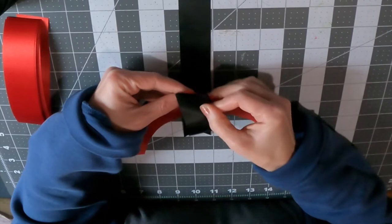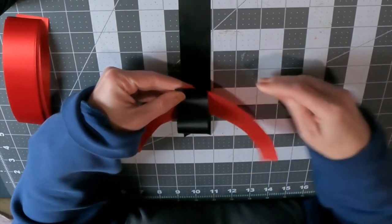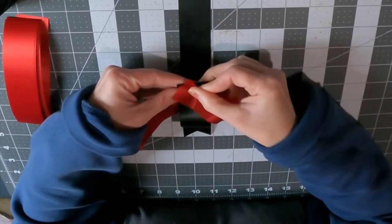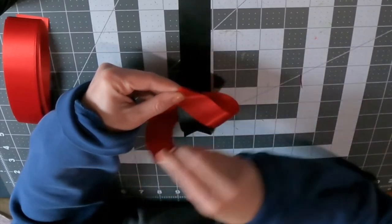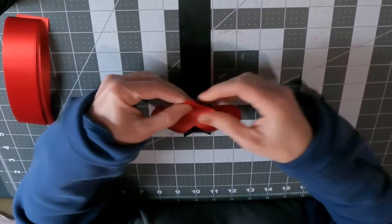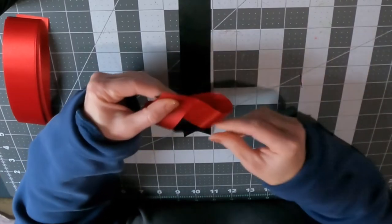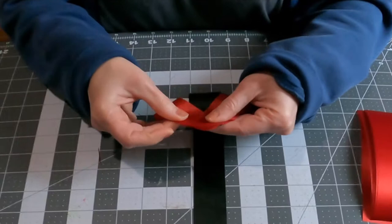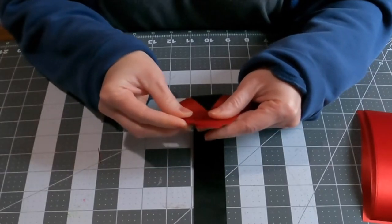You want to fold your loop for the middle ribbon first and then your side loops. The reason why you're doing that is because you want that black one in the middle, that middle loop to kind of play peek-a-boo. And then you also want it sticking out a little bit further than the side loops.